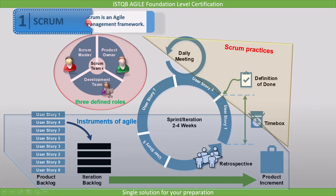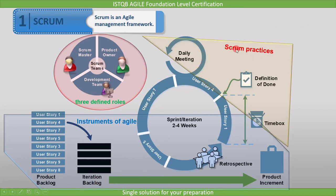What is Scrum? Scrum is an agile management framework, and the framework is made up of instruments and practices, and three roles are defined in it. Instruments of agile are Sprint, Product Increment, Product Backlog, and Sprint Backlog. Scrum practices are Definition of Done, Timeboxing, and Transparency. The three defined roles are Scrum Master, Product Owner, and Development Team.